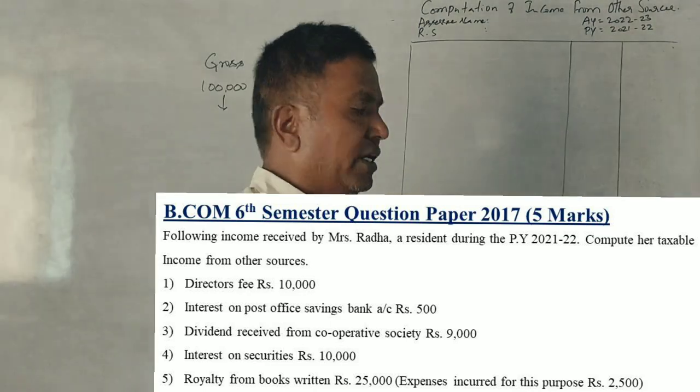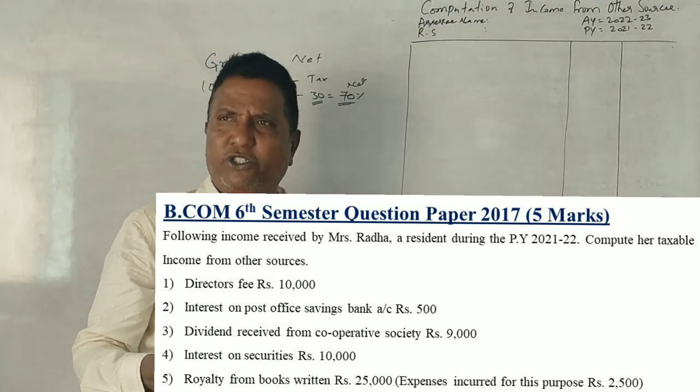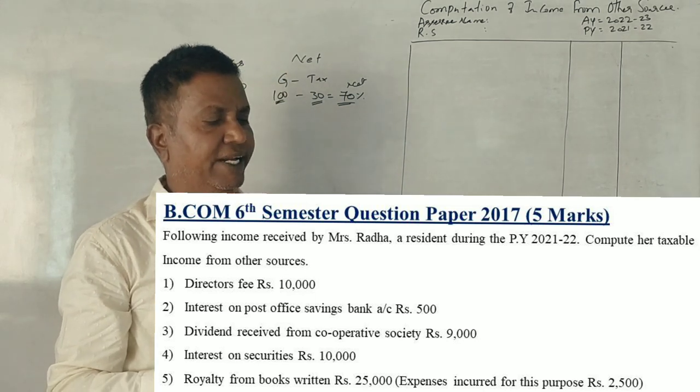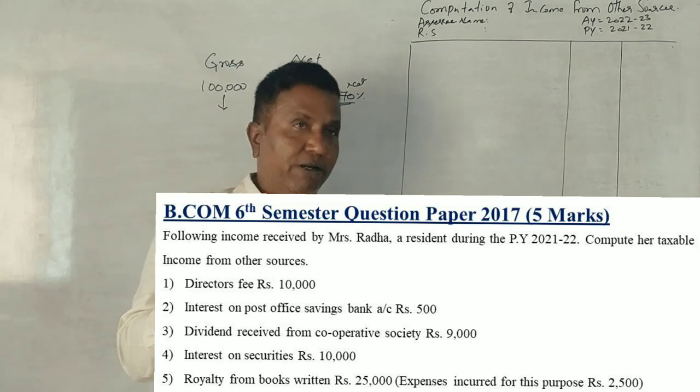Sixth question now. 2017, all the Kuda, in this simple question. Following income received from Mrs. Radha, a resident during the previous year 2021-22, compute her taxable income from other sources.